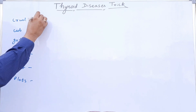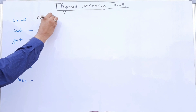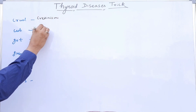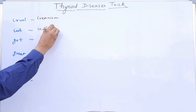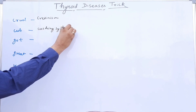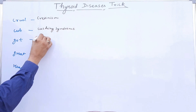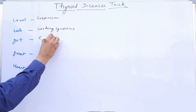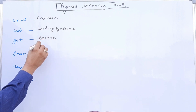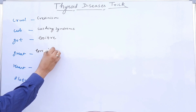Now let us decode it. Cruel stands for Cretinism. Cub stands for Cushing syndrome. God stands for Goiter. Great stands for Graves disease.